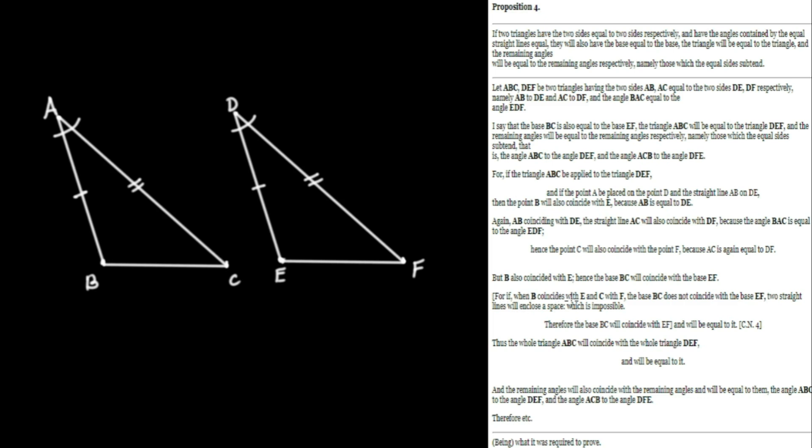For if when B coincides with E and C with F, so when B coincides with E and C coincides with F, if the base BC does not coincide with the base EF, then two straight lines will enclose a space. So they're going to enclose a space, which if you think about it, that doesn't make any sense if you have a straight line like so. These two points are coincident. Those are overlapping coincident points. That would have to enclose a space if BC doesn't coincide with EF, and that's impossible.